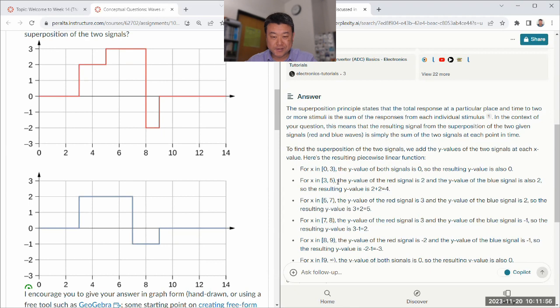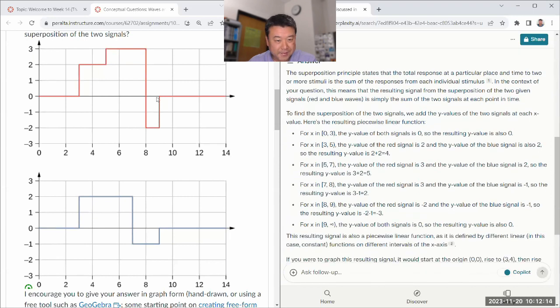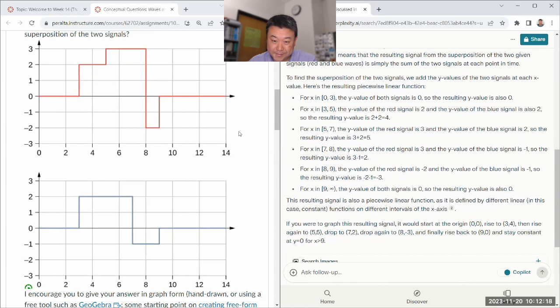It's quite common, although not universal. Superposition principle, it goes with whenever you have a linear response. So if you have non-linear response, it won't work, but so many things we look at do have linear response. Let's see if we did it correctly. So zero to three, it's zero. From three to five, it's four. Good. Five to seven, it's three plus two, it should be five. Good. Seven to eight, you are subtracting one from three, so it should be two. Eight to nine, it's minus three. Good. Nine to infinity is zero again. Yeah, that's correct.